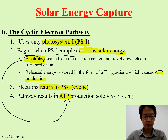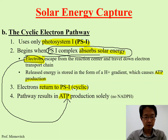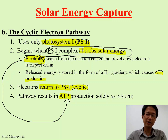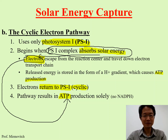Photosystem 1 absorbs solar energy, which energizes the electron, and then the high-energy electron is used to make ATP. Basically it's just this very simple concept. It's not as complicated as the non-cyclic pathway.